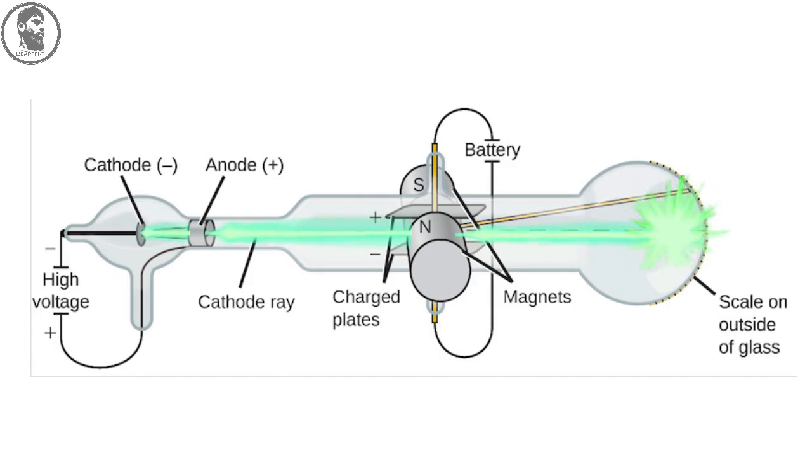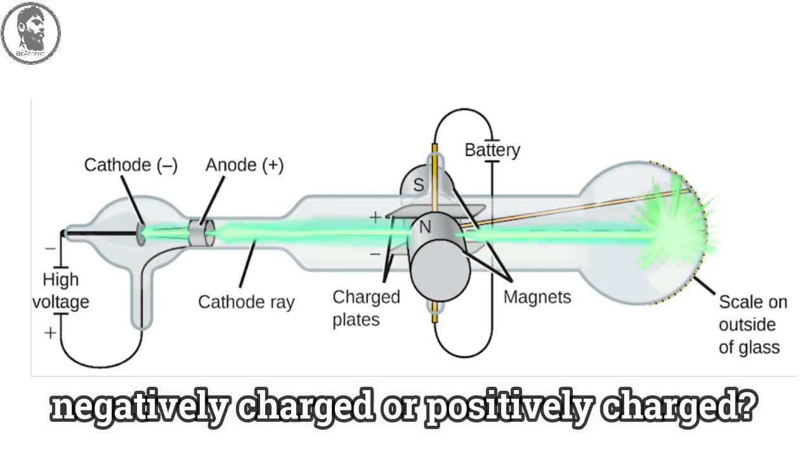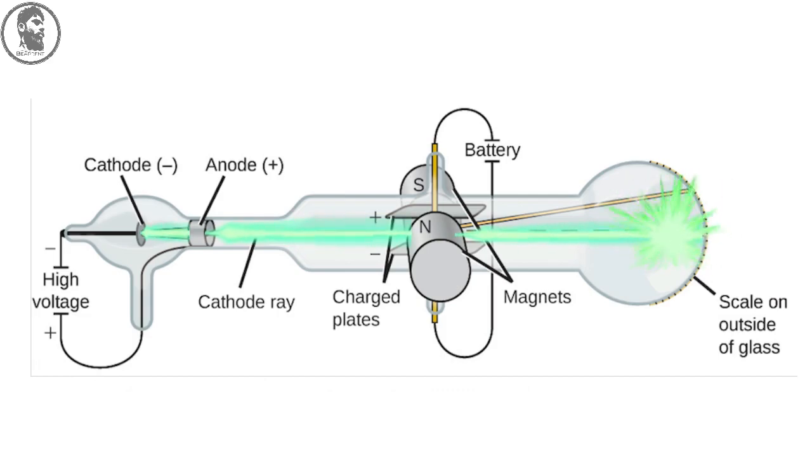But J.J. Thomson wanted to know whether these particles are negatively charged or positively charged. To know this, he placed two plates around the cathode ray tube as you can see over here. One plate was positively charged that he placed above the tube and another was negatively charged plate that he placed below the tube.